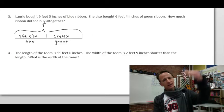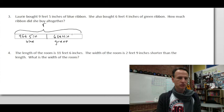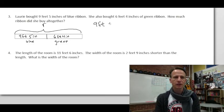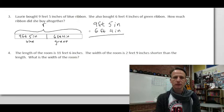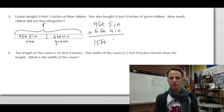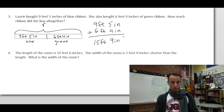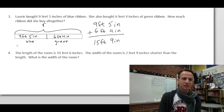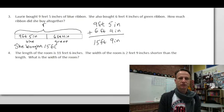We can set this up vertically just like other addition — feet and inches don't need initial conversions here. Nine feet five inches plus six feet four inches: nine plus six is 15 feet, five plus four is nine inches. She bought 15 feet nine inches of ribbon. No conversions needed at the end — straightforward!